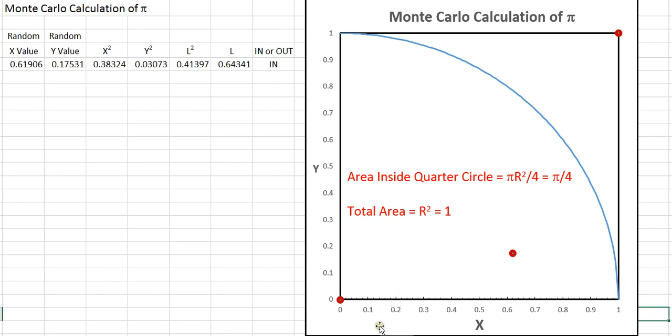Now let's imagine that we pick a random number of x between 0 and 1 and y between 0 and 1. I have the value here and you can see that it's inside the quarter circle.